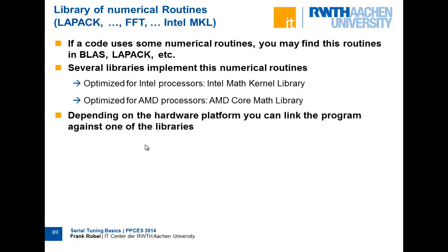Our codes are often made of numerical kernels that can be found in libraries like BLAS or LAPACK. There are special optimized implementations from different vendors — Intel has the Intel Math Kernel Library (MKL) with optimized implementations. If your program uses a BLAS routine, you can just switch the library by linking to the right one. It's a really easy way and you don't have to look for optimization — if there's new hardware, you just switch the library and everything is fine.